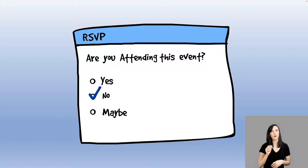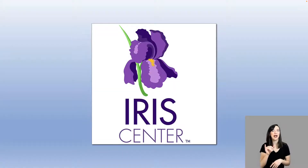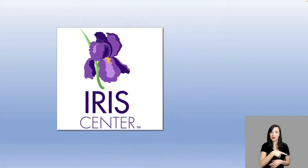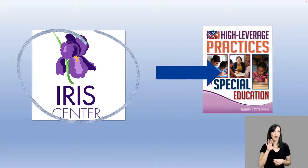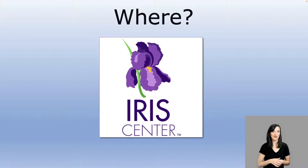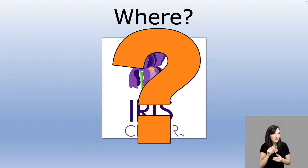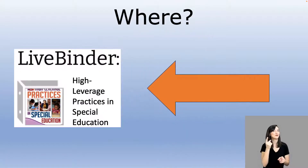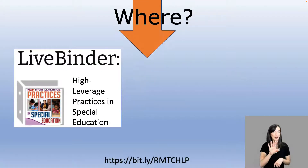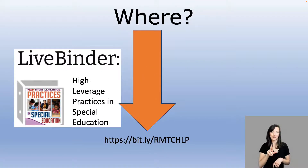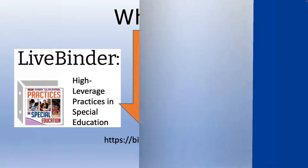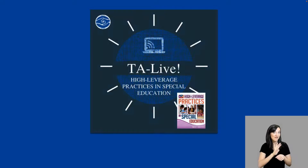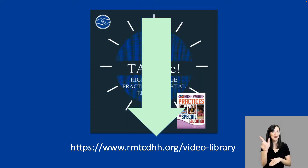Can't make it to the discussion session, or perhaps you're watching a recording of this at a later time? An idea to still work within your district is to visit the IRIS Center HLP interactive alignment tool. This tool identifies which IRIS resource provides information on each specific HLP. Where can you find the information for the IRIS Center? If you guessed the LiveBinder, you are right! Remember, you can find that at bit.ly/rmtchlp. To watch more videos about the HLPs, make sure you check out the TA Live archive in our video library.